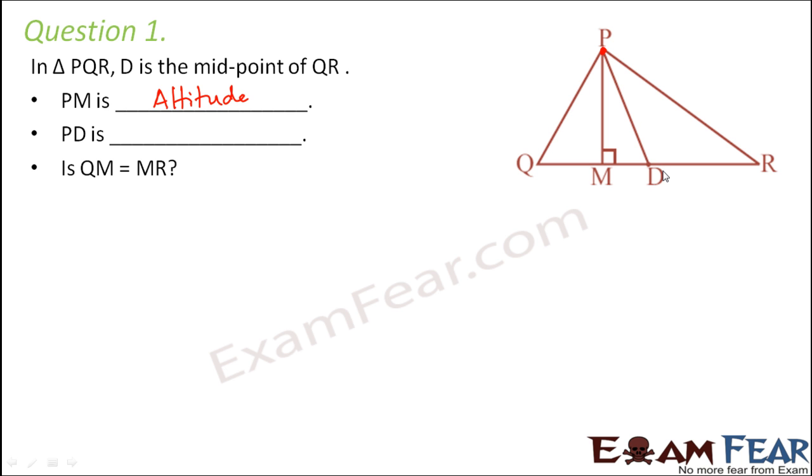And what is PD? PD is that line segment which joins the midpoint of the opposite side to the vertex. So this is nothing but median. Is QM equal to MR? Now D is the midpoint, so therefore QD is equal to DR.